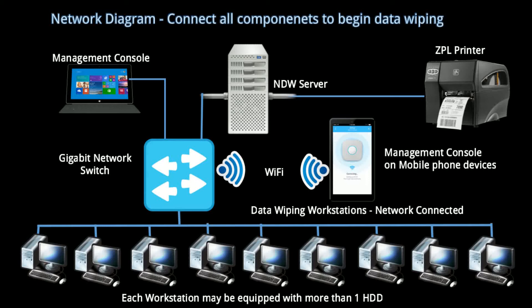The management console is connected. The ZPL printer is connected through a USB cable to the NDW server. If you want to manage the NDW system via browser on a mobile phone, make sure it's connected through Wi-Fi and you can access the management console web interface. Now you are ready to begin — thank you for watching this tutorial. Please follow the next tutorial to learn how to use the NDW application.